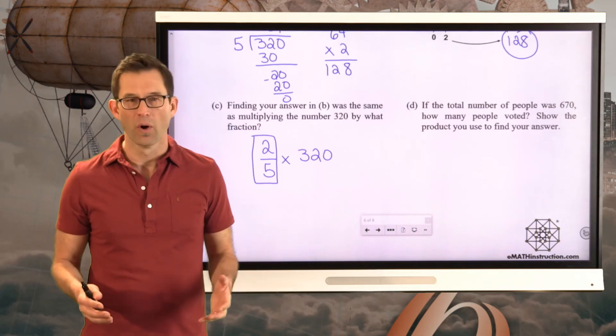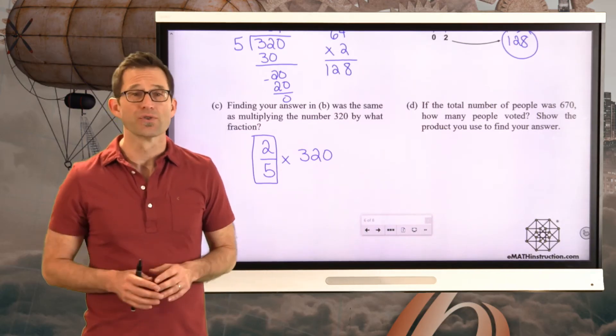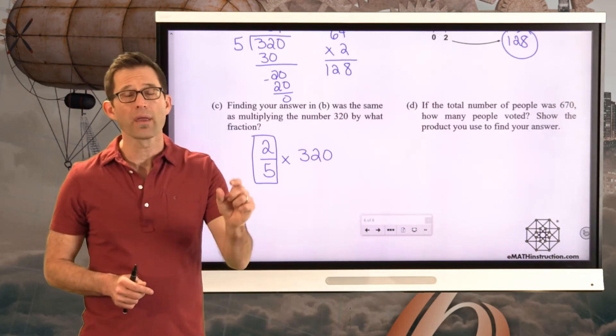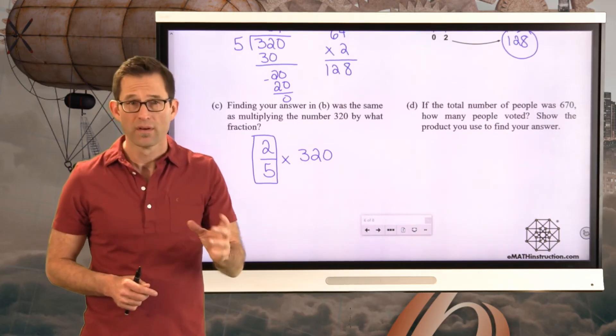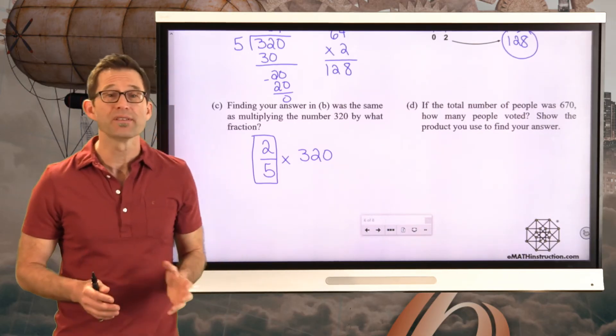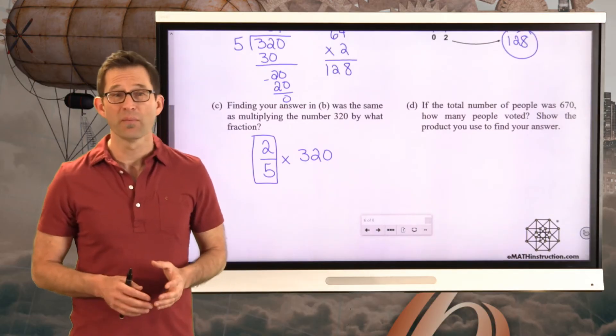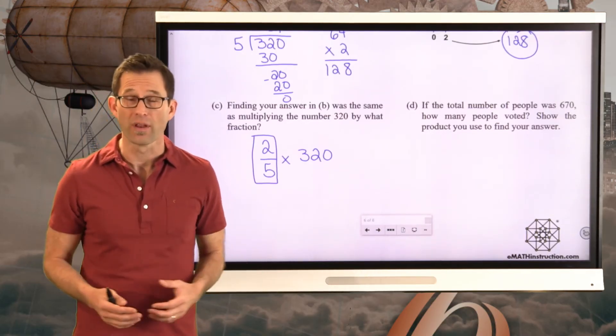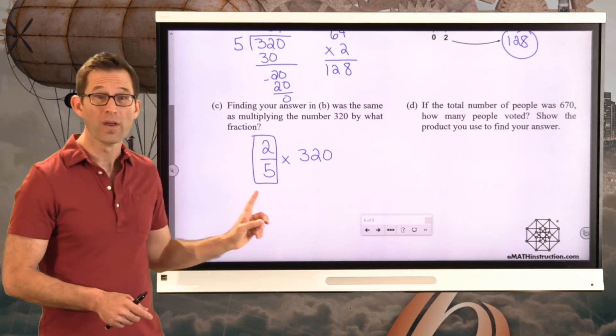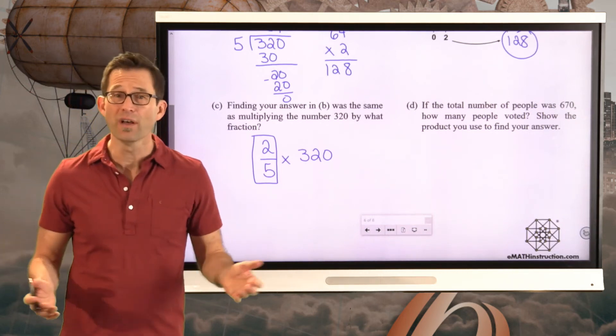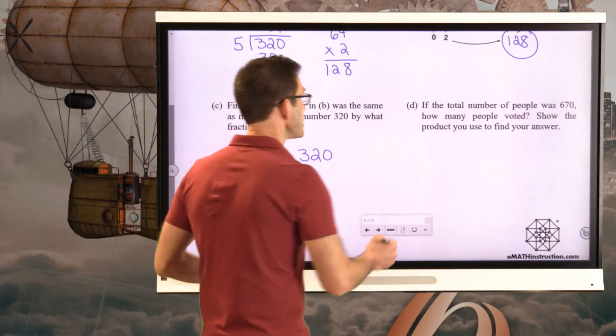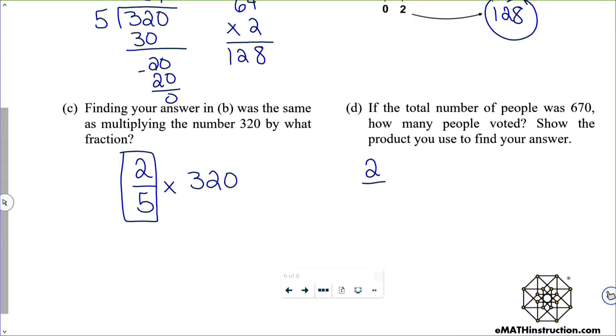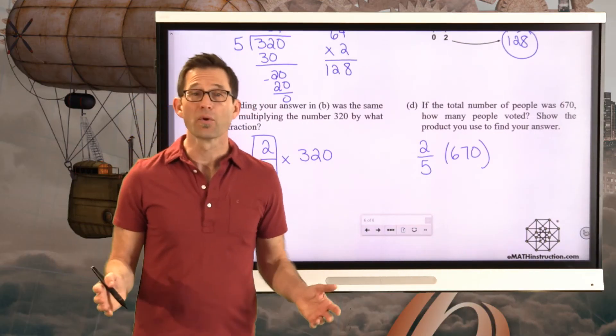If the total number of people was 670, how many people voted? Show the product you used to find your answer. Well, think about this for a moment. This is a special type of a ratio where we're comparing a part of a whole to the whole entirely. And what we're really saying when we say two out of five people voted is we're saying two-fifths of the people voted. Which is why we can just multiply by two-fifths.